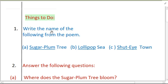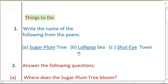Things to do. Write the name of the following from the poem. They have given tree, sea, and town — search and write their names from the poem. The tree is the Sugar Plum Tree. The sea is the Lollipop Sea. The town is Shut-Eye Town.